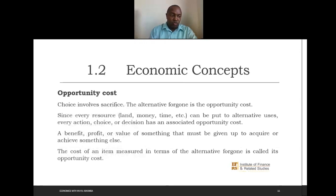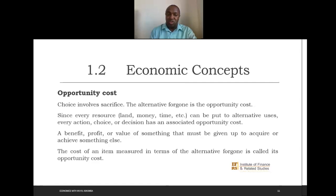If you choose, it means you have to sacrifice something — you have to forgo something. That something you forgo is known as opportunity cost. It is the alternative forgone because of the limited nature of our resources, meaning we cannot satisfy all the needs and wants we have. We have to choose some and ignore others — those that we ignore are the opportunity costs, sometimes referred to as the second best alternative forgone. Every resource can be put into alternative use, and the choice you forgo is the opportunity cost.